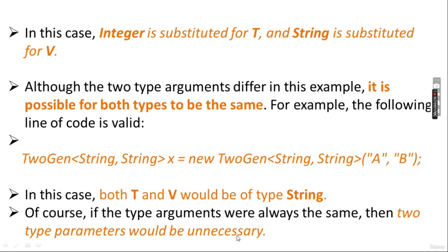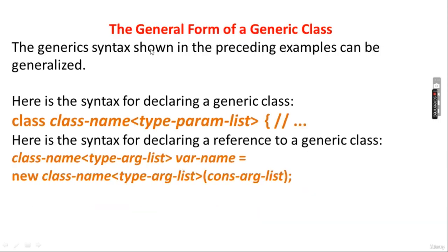In that case, new TwoGeneric<String, String>(a, b) would have both T and V of type String. Of course, if the type arguments are always the same, two type parameters would be unnecessary — you could pass just one. The general form of a generic class is: class ClassName<type-parameter-list>. The syntax for declaring a reference is: ClassName<type-argument-list> variableName = new ClassName<type-argument-list>(constructor-argument-list).